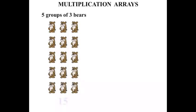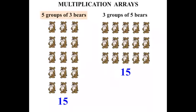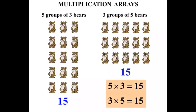Now let's consider what we've seen. Five groups of three bears, and three groups of five bears — we got fifteen both times. Five groups of three bears is five times three, or five lots of three, and it equals fifteen. Three groups of five bears we can write as three times five, which means three lots of five — again, that equals fifteen as well. So look at that: five times three equals fifteen, and three times five equals fifteen. It doesn't seem to matter what order we multiply in — and it doesn't. It doesn't matter what order we multiply two numbers in, we'll get the same answer. Very important to remember that.